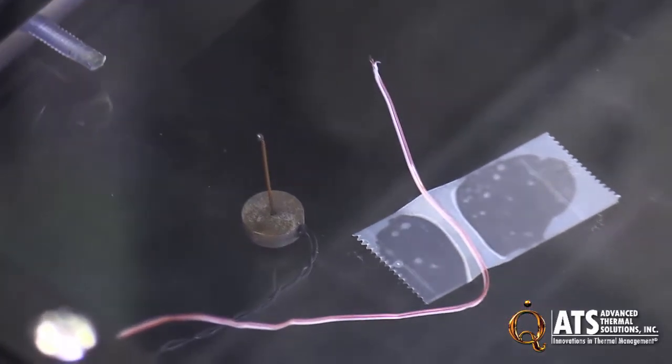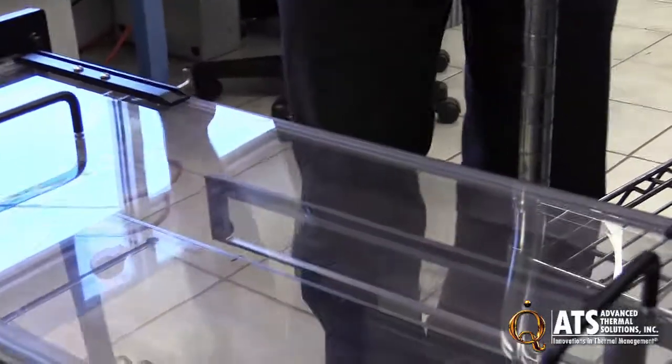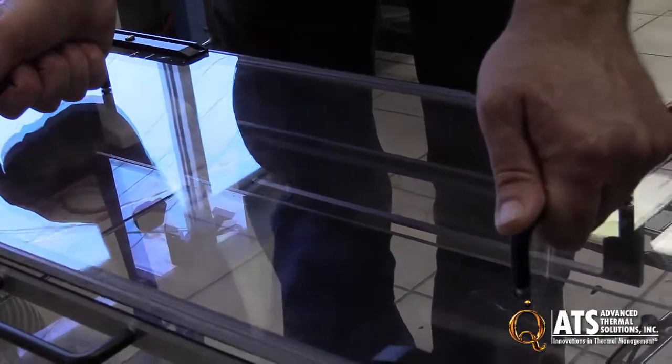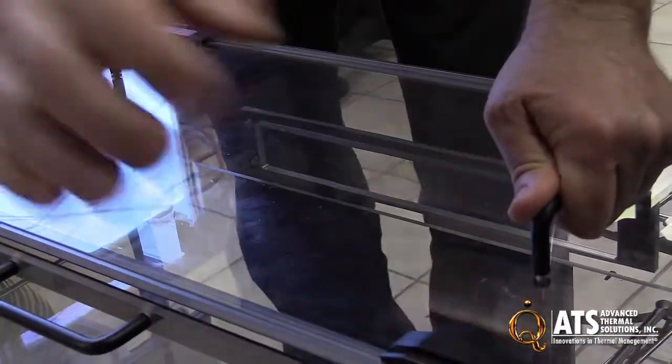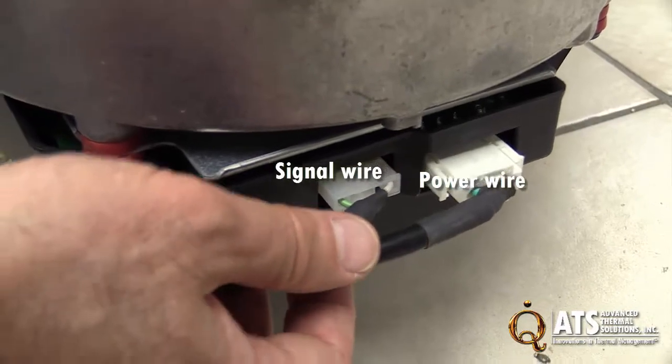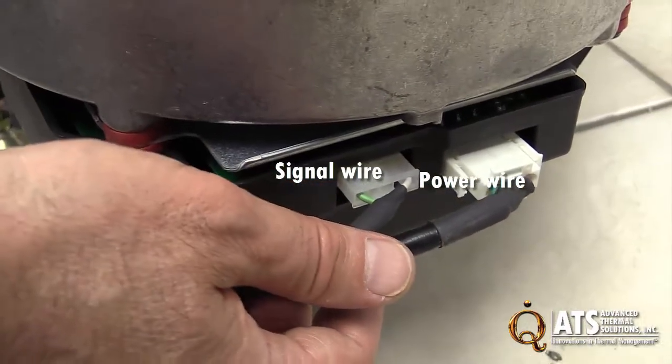Next to that, the wind tunnel door can be easily opened by holding this handle. You can put it back and then put the latches back to lock in place. The blower section has two wires: one is a signal wire and one is the power wire, which are connected to the controller.